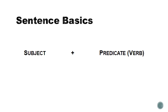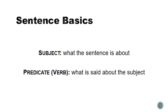Continuing with our review from the previous presentation — the basics of a sentence. A sentence has a subject and a predicate. The predicate is just the name for the second half of the sentence, everything that's not the subject, and it includes the verb. The verb is technically only one part of the predicate. Subject and predicate are the essential components of a sentence.